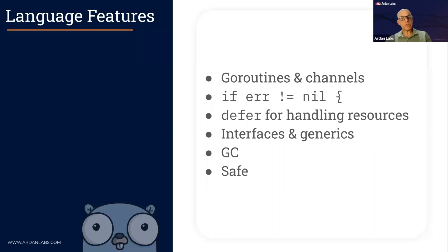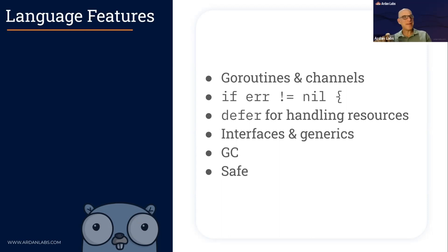Unlike C, which lets you traverse memory as far as you want — remember the SSH Heartbleed bug, that was exactly that — Go is safe. It defines an unused import or an unused variable as a compilation error, because an unused variable is pretty much a bug. The language also discourages misuse: Go has pointers, but we use them to pass things by reference; we don't do pointer arithmetic. We don't say 'this pointer plus one' — that's not something Go lets you do.